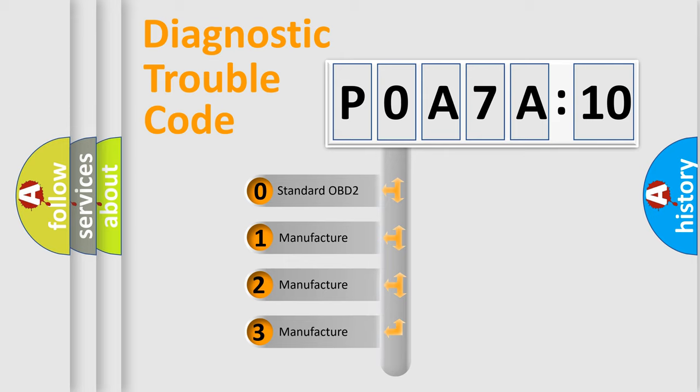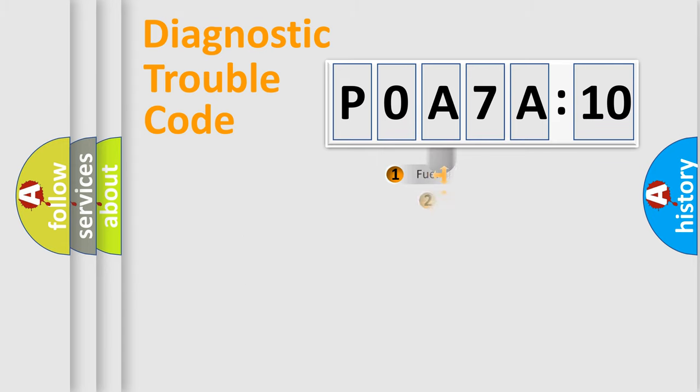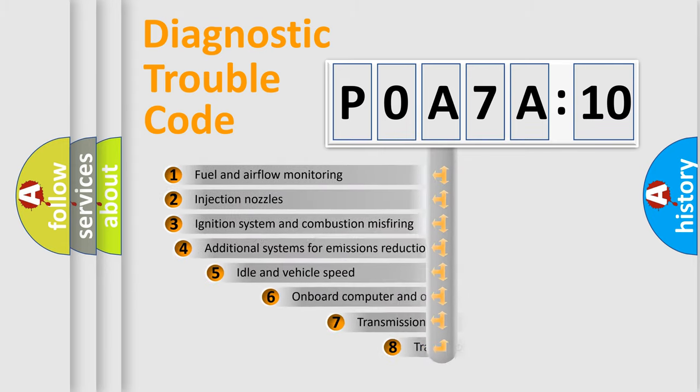If the second character is expressed as zero, it is a standardized error. In the case of numbers 1, 2, or 3, it is a manufacturer-specific expression of the car-specific error.